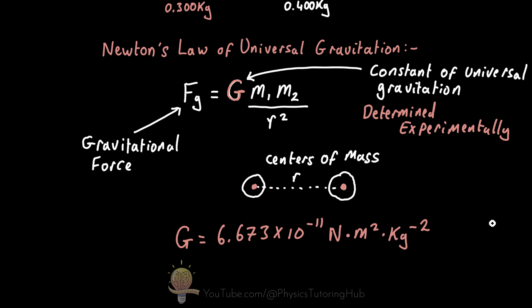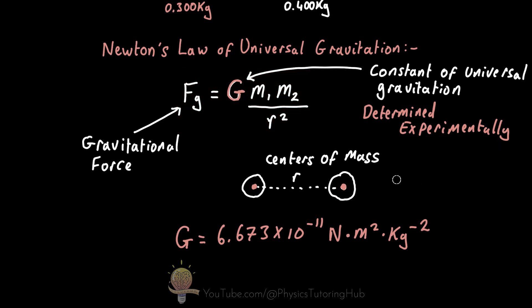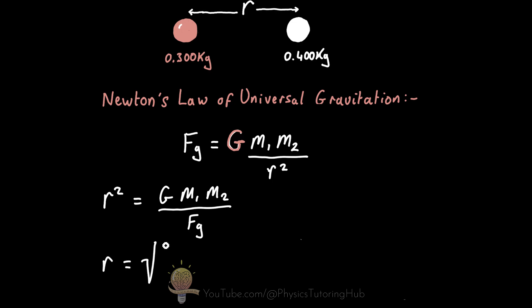And now because we already have the gravitational force between the two billiard balls, we can transpose this equation to make r the subject of the formula. So we can multiply both sides of the equation by r squared and at the same time divide both sides of the equation by the gravitational force. And to get rid of this squared term here we just square root both sides.